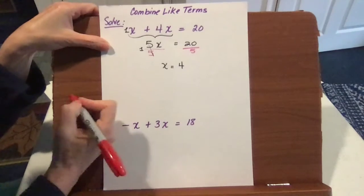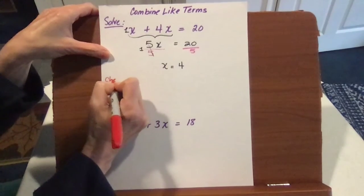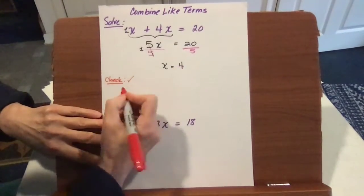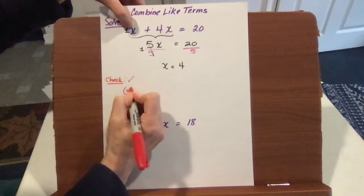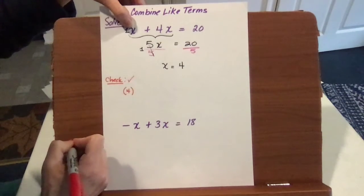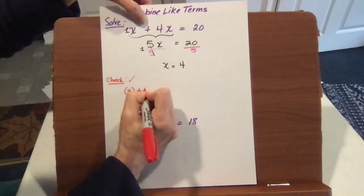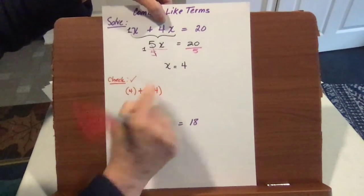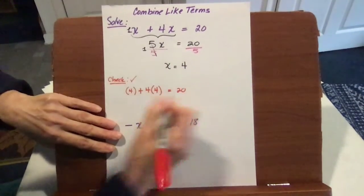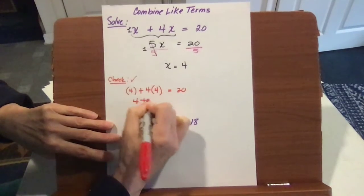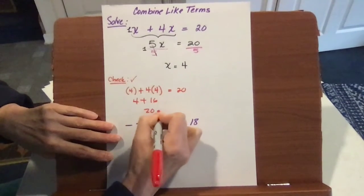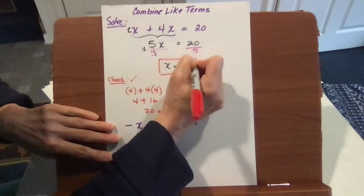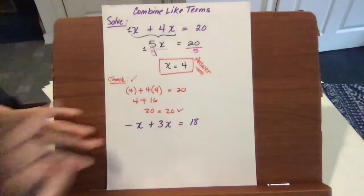You should always check your answer. Substitute four in for x — put it in parentheses in case negative numbers are involved — plus four times four equals 20. Calculate the left-hand side: 4 plus 16 is 20, equals 20, and it checks. So x equals 4 is your answer, and you know it's correct by checking.